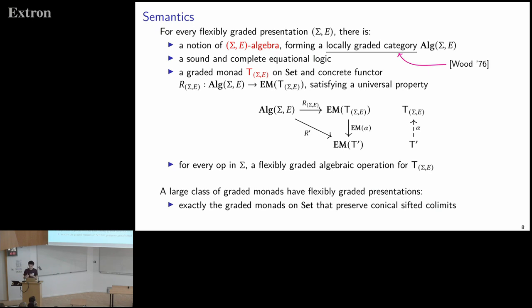Constructing the algebraic operations is slightly different from the ordinary story. Ordinarily, algebras for the monad are in particular algebras for the presentation, and the interpretation of operations gives the algebraic operation. That's not true in the graded case — the functor taking algebras of the presentation to algebras of the graded monad is not invertible. However, free algebras of the graded monad are actually algebras of the presentation, and these are the only ones needed to construct the algebraic operations. So for many natural computational effects, we get flexibly graded presentations with nice algebraic operations.